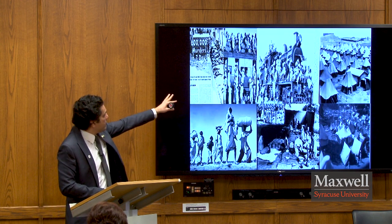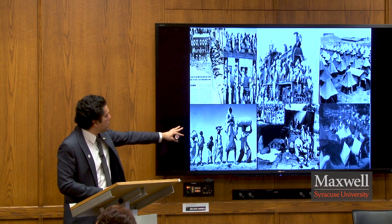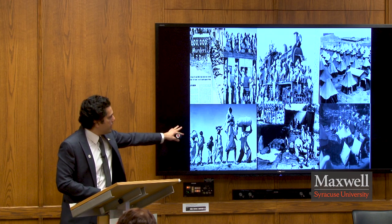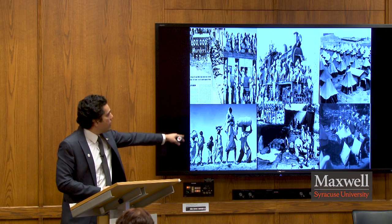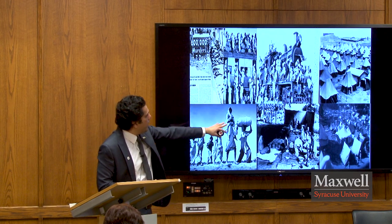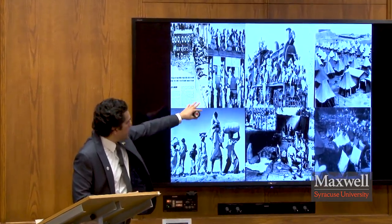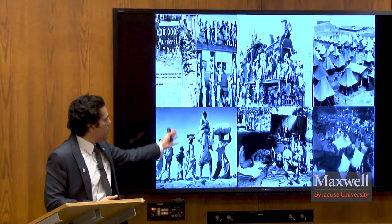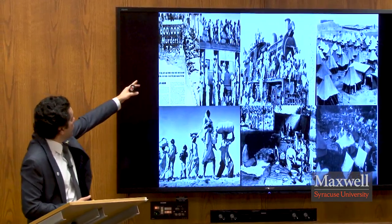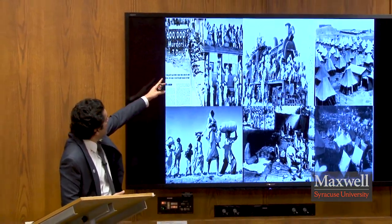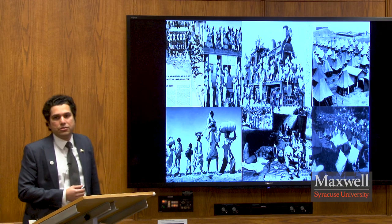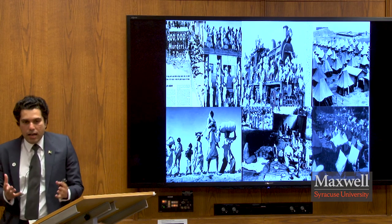These pictures tell the story of Pakistan's initial days: refugee camps, mass migration, and a news clipping reporting six lakh murders in seven days. These were the times of 1947 when India and Pakistan started their journey.